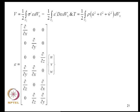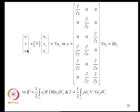Expressing strain energy in terms of displacements: strain is given by the differential operator matrix applied to displacement vector [U, V, W]^T. Representing U, V, W in terms of shape functions and nodal displacements as N·U_E, the strain becomes B·U_E where B is the operator matrix applied to N. Strain energy and kinetic energy are then expressed in terms of nodal displacements, forming the basis for structural matrix assembly.